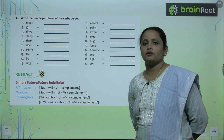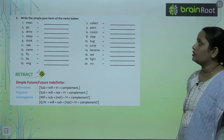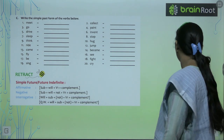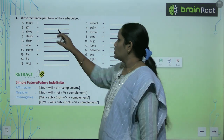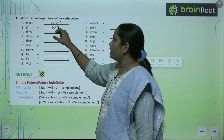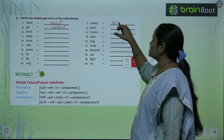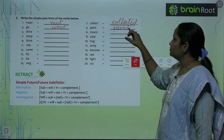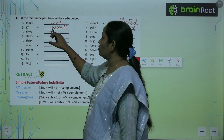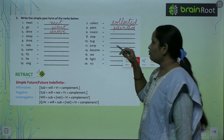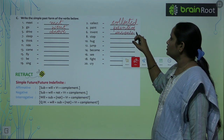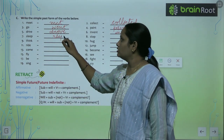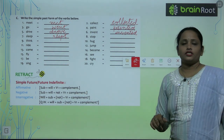Next is Exercise C — write the simple past form of the given verbs. 'Meet' becomes 'met'. 'Go' becomes 'went'. 'Collect' becomes 'collected'. 'Paint' becomes 'painted'. 'Drive' becomes 'drove'. 'Invent' becomes 'invented'. 'Sleep' becomes 'slept'. These are a few past forms, children — the rest you have to write yourself.